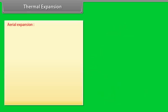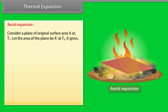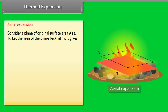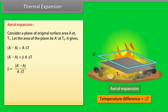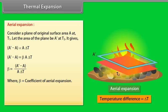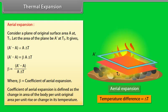Aerial expansion: Consider a plane of original surface area A at temperature T1. Let the area of the plane be A' at temperature T2. It gives A' − A = βA·ΔT. The value of beta is equal to (A' − A)/(A·ΔT), where beta is the coefficient of aerial expansion, defined as the change in area of the body per unit original area per unit rise or change in temperature.